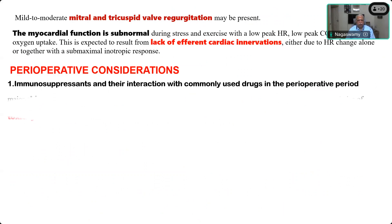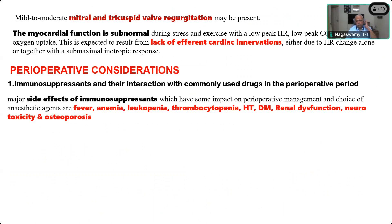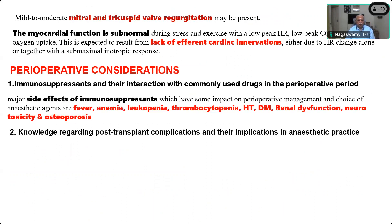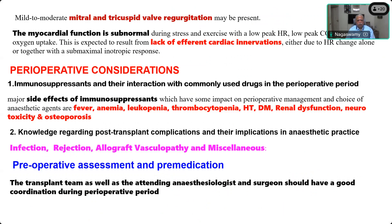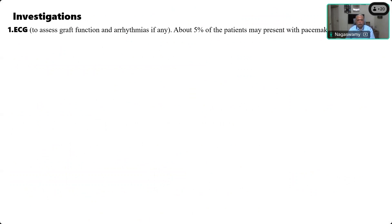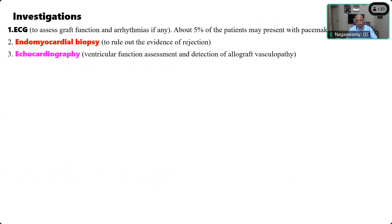Perioperative concerns: these patients are on immunosuppressants and their interactions with commonly used drugs must be considered. Major side effects of immunosuppressants include fever, anemia, leukopenia, thrombocytopenia, hypertension, diabetes, renal dysfunction, neurotoxicity, and osteoporosis. You must also have knowledge of post-transplant complications and their implications for anesthesia practice: infection, rejection, allograft vasculopathy, and others. Pre-operatively, good coordination is needed between the transplant team, anesthesiologist, and surgeon.